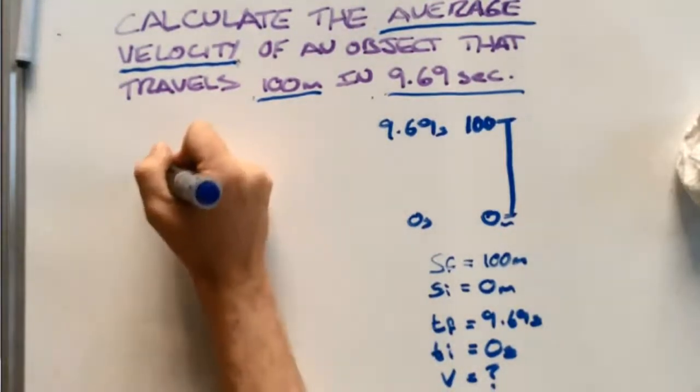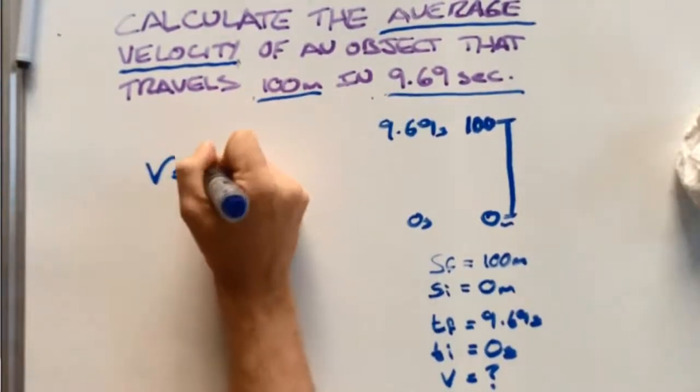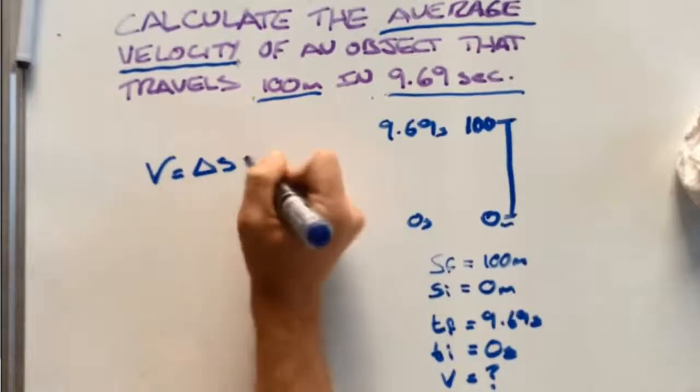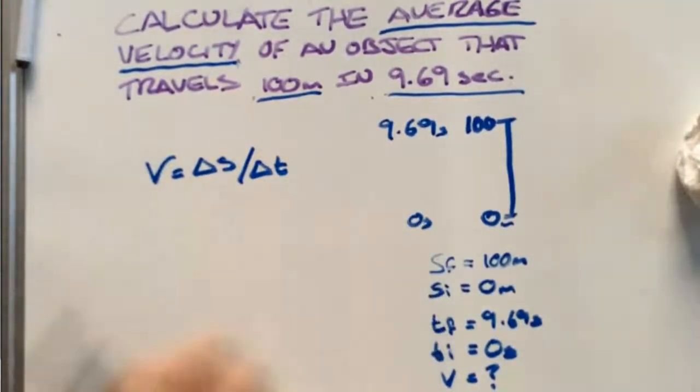So our formula for velocity is equal to our change in displacement divided by our change in time. Remember what change in means: final minus initial.